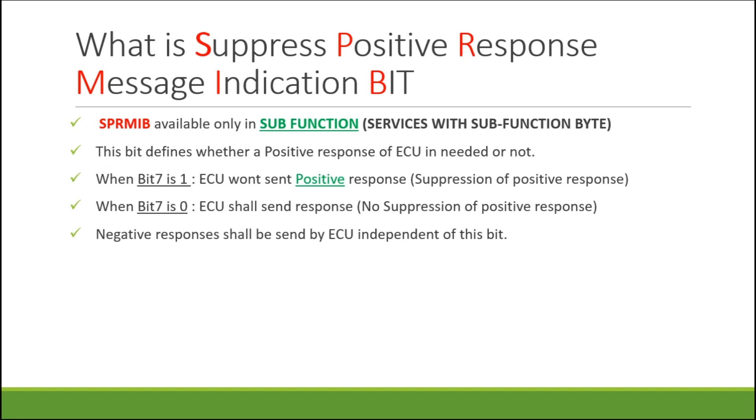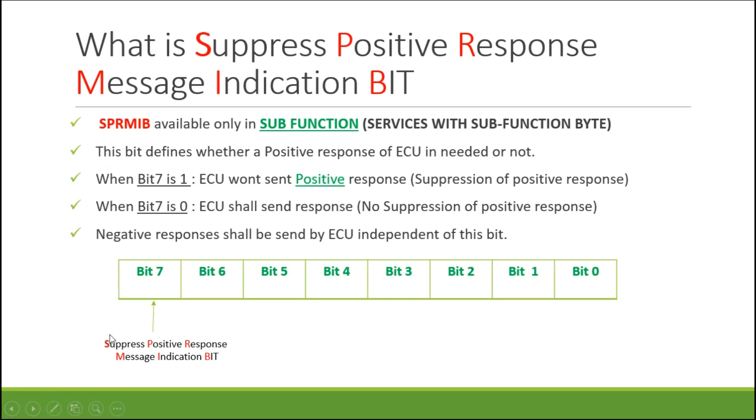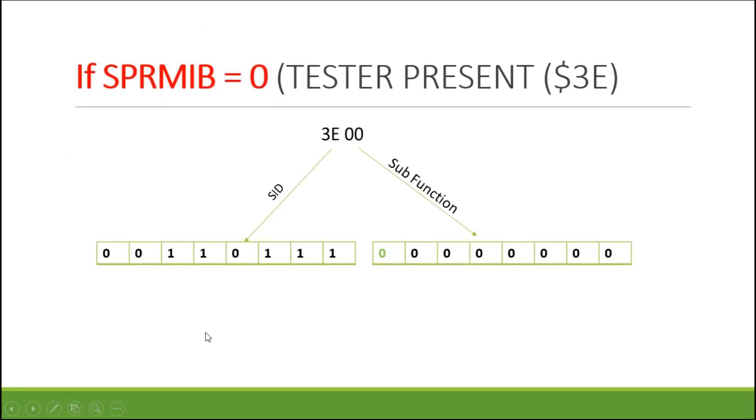Here, negative responses shall be sent by an ECU independent of this bit. Here you can see the sub-function, so bit 7 is the Suppress Positive Response Message Indication bit. So this is one example.